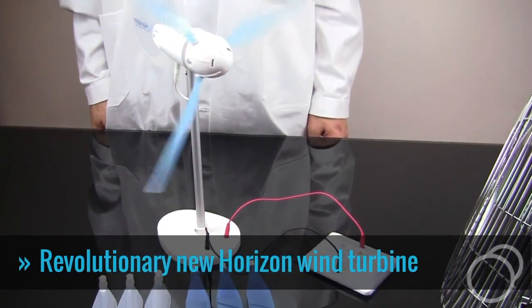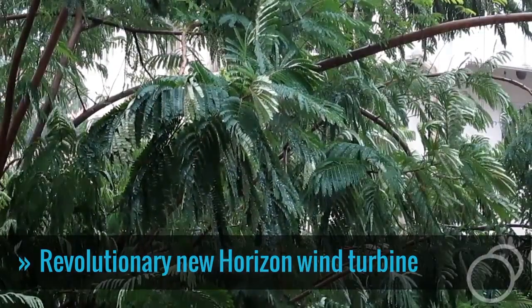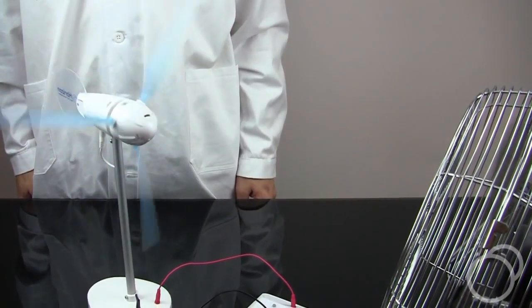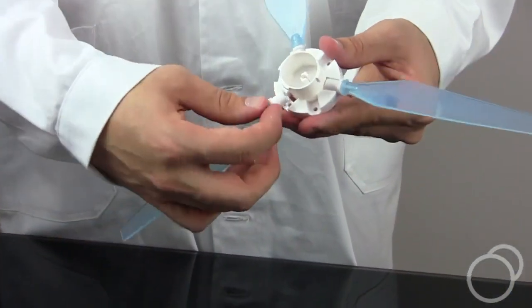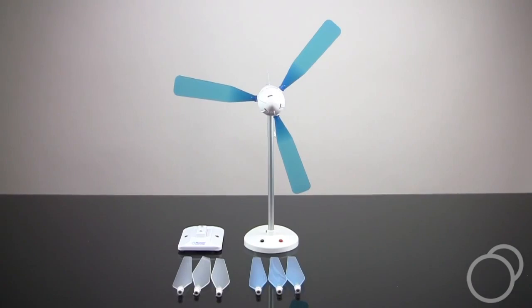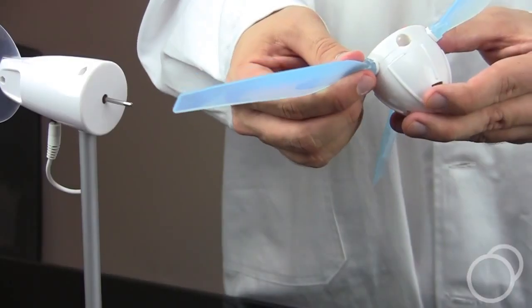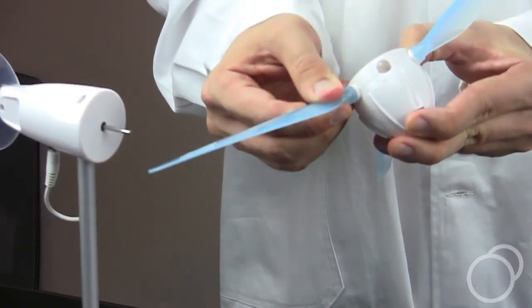The wind turbine generates electricity using the wind outside or the power of a desktop fan. Its blades are easily interchangeable allowing for hundreds of different configurations with three sets of three types of blades, each adjustable to three different angles.